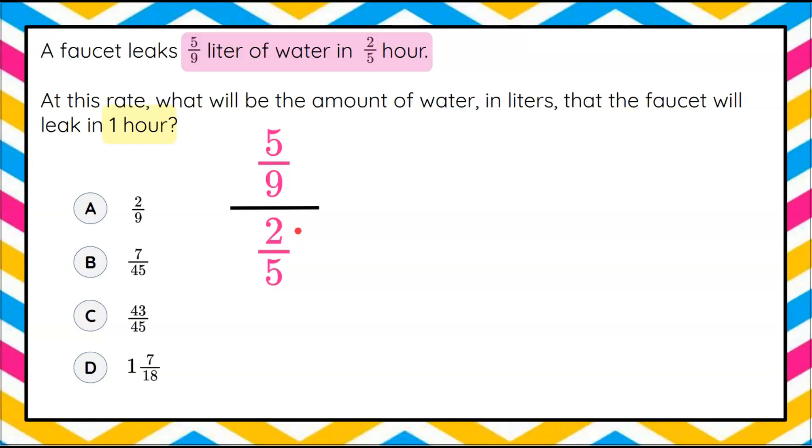One method to simplifying a complex fraction is to rewrite it as a division problem because this fraction or ratio bar also represents a division symbol. So let's do that. This is equivalent to five-ninths divided by two-fifths.